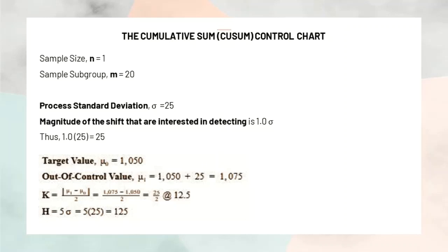Other than that, target value is also given. With that, out of control value which is mu1 can be calculated by adding the target value with the magnitude of the shift.